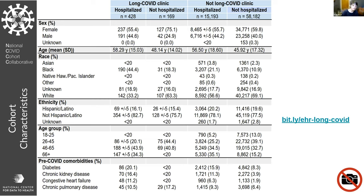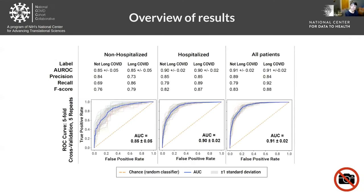At those same three sites, we looked at patients that did not end up at the long COVID clinic and attempted to differentiate them. We used this set of patients to train and test the machine learning model, evaluating patterns of diagnoses and medications to determine which features are possibly indicative of long COVID. We ended up building three different models — we felt that hospitalized and not hospitalized patients were different enough to demand separate models, although we also built an all-patients model.